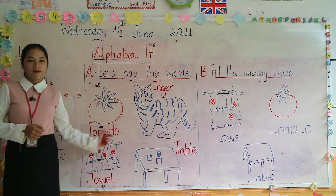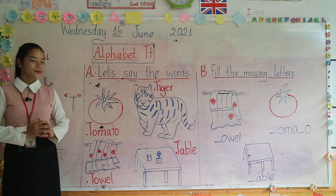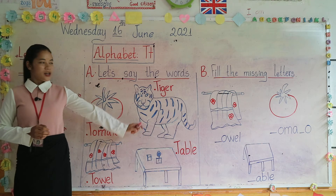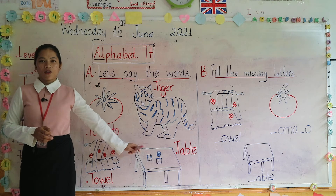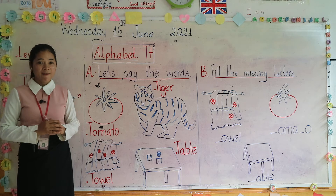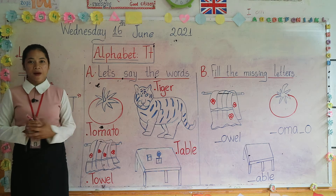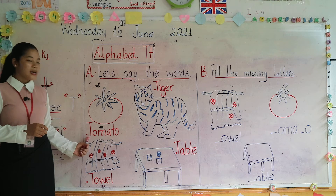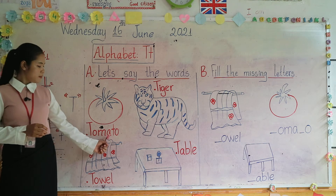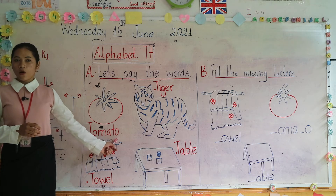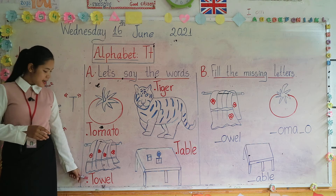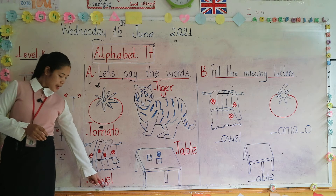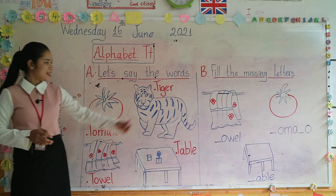Okay, now let's say all the words over again with me. The first is tomato, tomato. Next is towel, towel. Tiger, tiger. Table, table. Okay, and now let's say the word and spell. Are you ready? Tomato — T, O, M, A, T, O. Great. Table. T, O, W, E, L. Table. Great. Tiger.